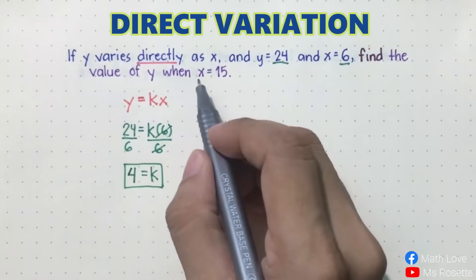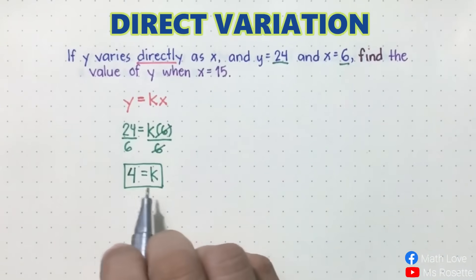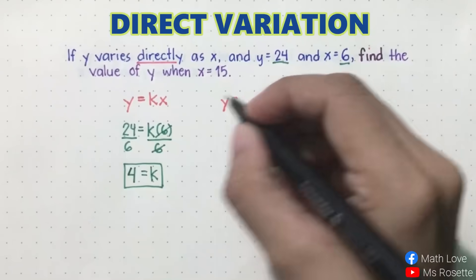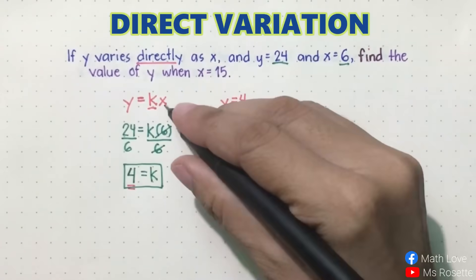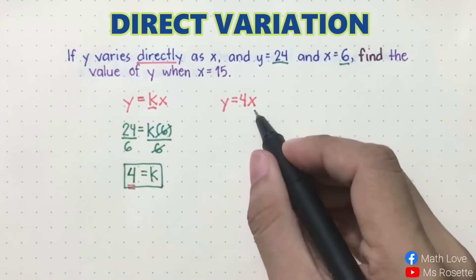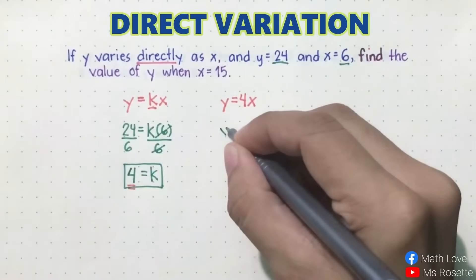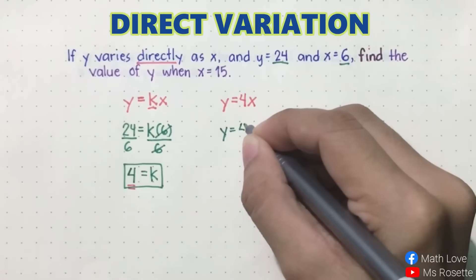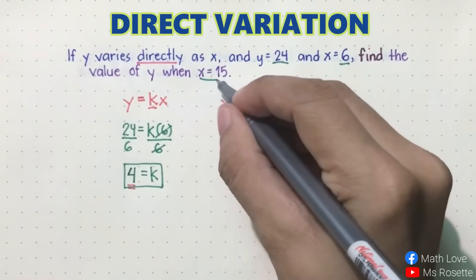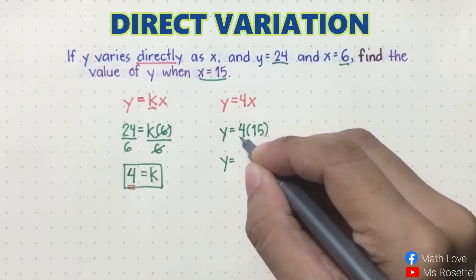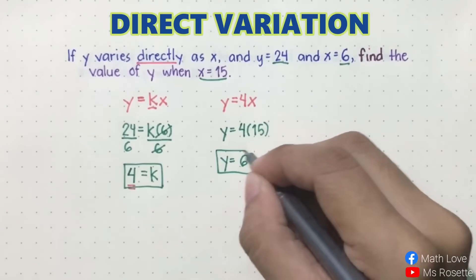To solve for y when x is equal to 15, we will use this equation again. But this time, instead of k, we will use the value we obtained. So it will be y is equal to 4x. Now substitute x is equal to 15. So y is equal to 4 times 15, which is equal to 60. The value of y when x is 15 is 60.